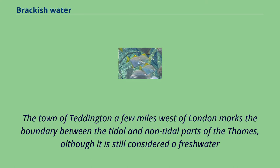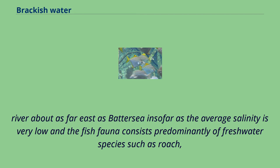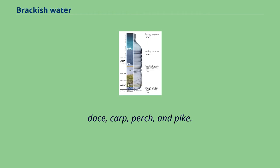The River Thames flowing through London is a classic river estuary. The town of Teddington, a few miles west of London, marks the boundary between the tidal and non-tidal parts of the Thames, although it is still considered a freshwater river as far east as Battersea, insofar as the average salinity is very low and the fish fauna consists predominantly of freshwater species such as roach, dace, carp, perch, and pike.